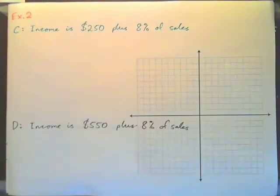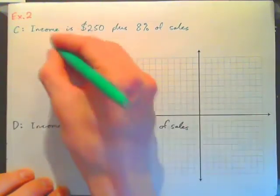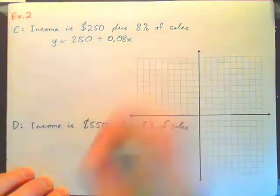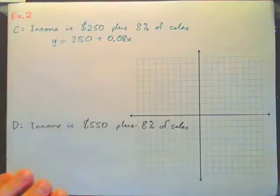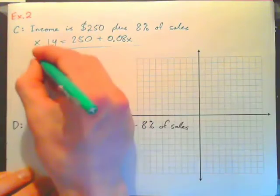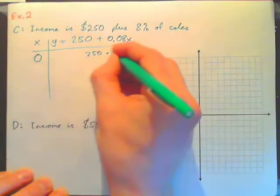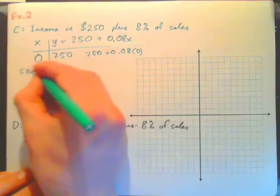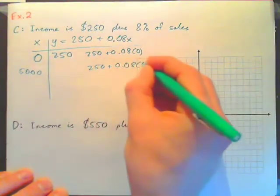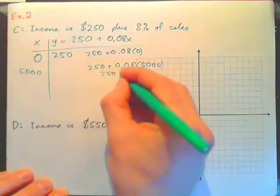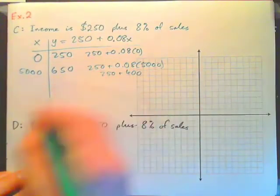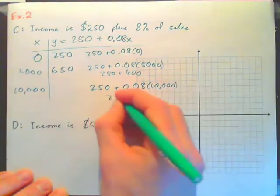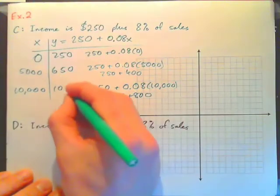Example two. Income is $250 plus 8% of sales. We can write an equation: income Y is $250 plus 0.08 times sales X. And so we can do a little table. Say if we sell nothing, we get $250 plus 0.08 times 0, we get $250. If we sell $5,000 worth of product, we get $250 plus 0.08 times 5,000, and that amounts to $250 plus $400, so we get $650. If we sell $10,000 worth of stuff, we get $250 plus 0.08 times 10,000, so that's $250 plus $800, which would be $1,050, right?